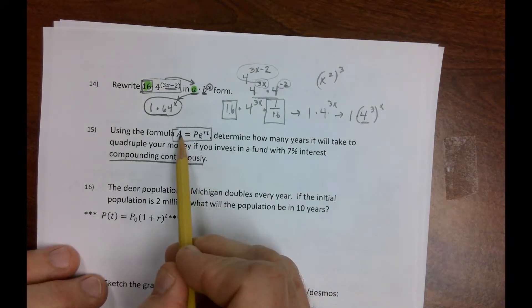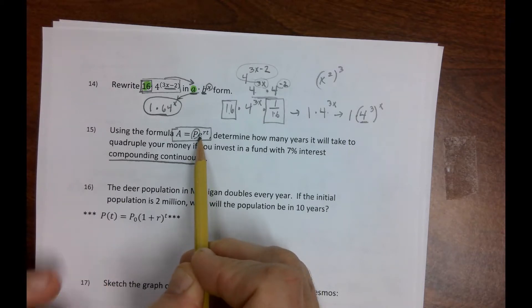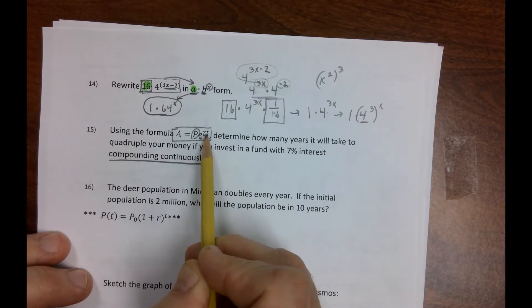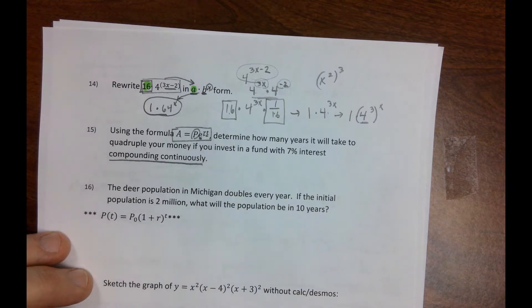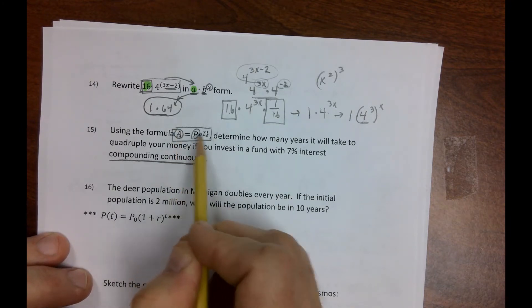So this is your initial investment. Remember, E is 2.71, so that's like a constant. That's your interest rate, and that's the time you're going to let that sit. And this is the amount that your investment's worth after a certain amount of time.